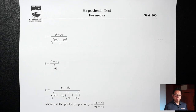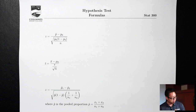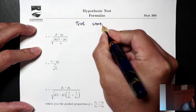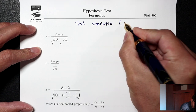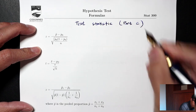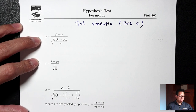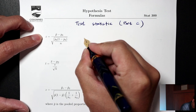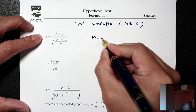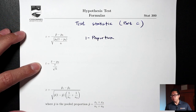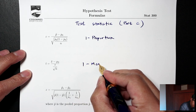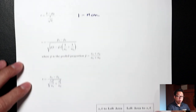The first page has formulas I'll need today — formulas for finding the test statistic, which is usually part C of the process. The first two formulas are ones we used last time for the one-sample situation. The first one with the Z is for one proportion. The second one with the T is for one mean.